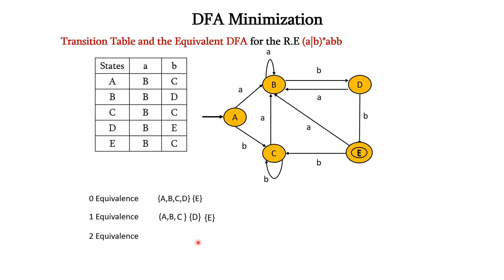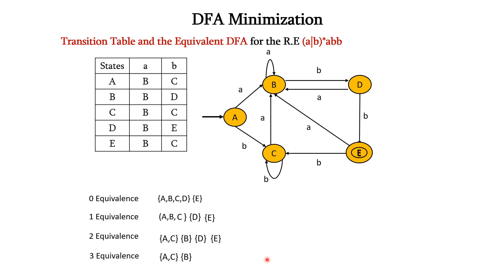B has to be taken to a separate set because it is not equivalent to A. So, we have AC, B separately, then D, and then E. Next, we have to find the three equivalents. For three equivalents, let us consider the set AC. If we check for AC again, we have BC and BC for both input A and B in A and C. Since both are having the same state transitions, we can stop here. So, we have the same states: AC, B, D, and E.